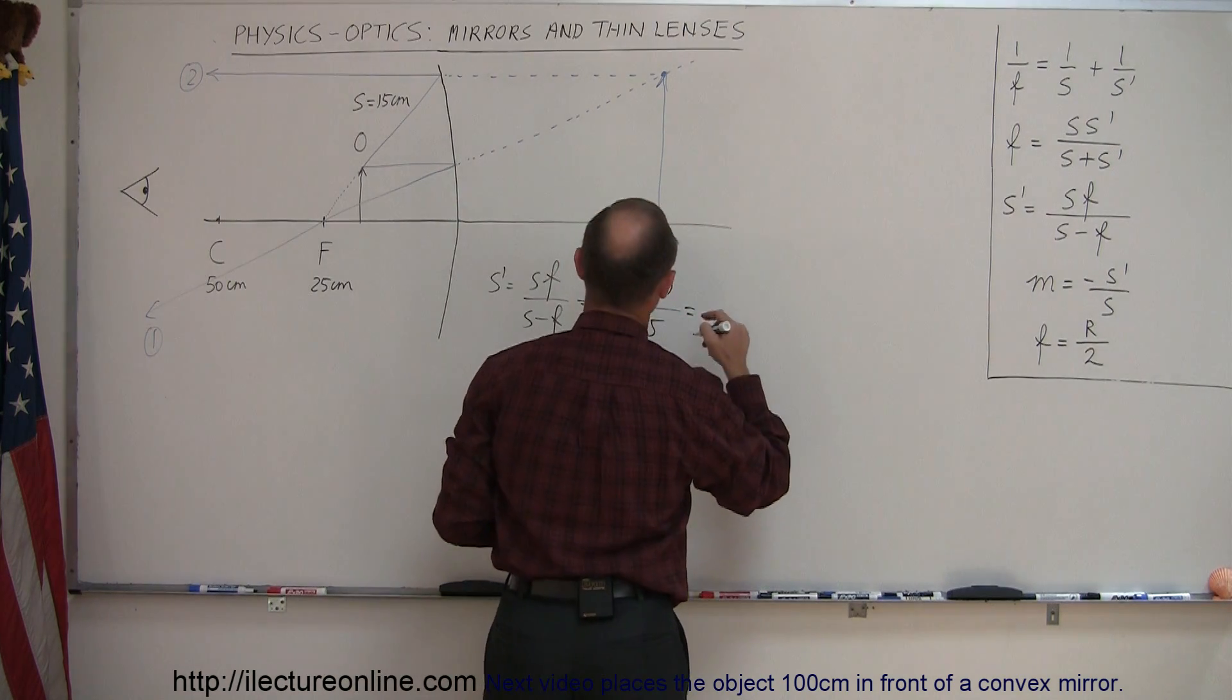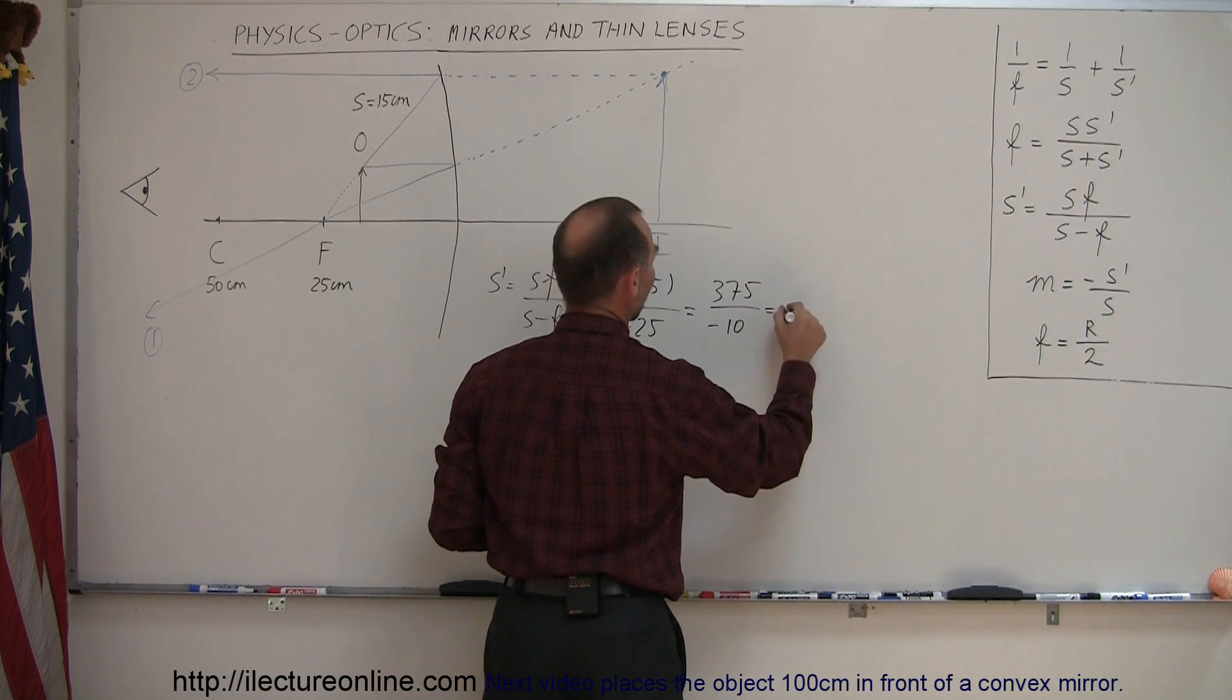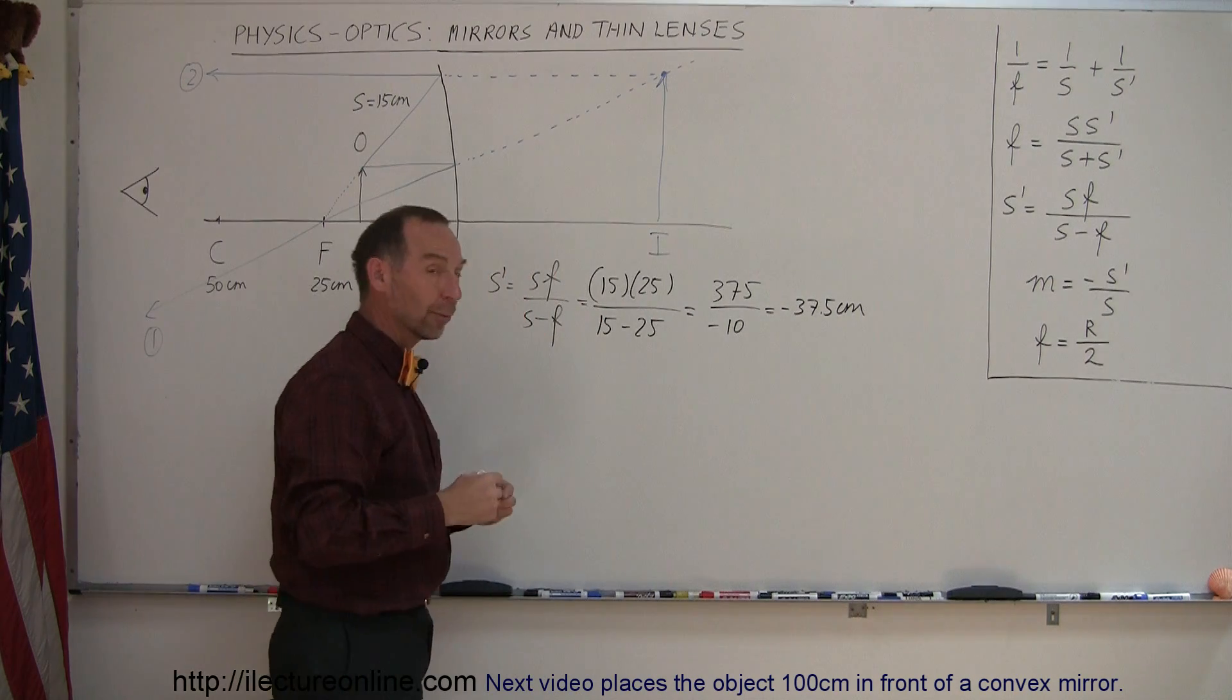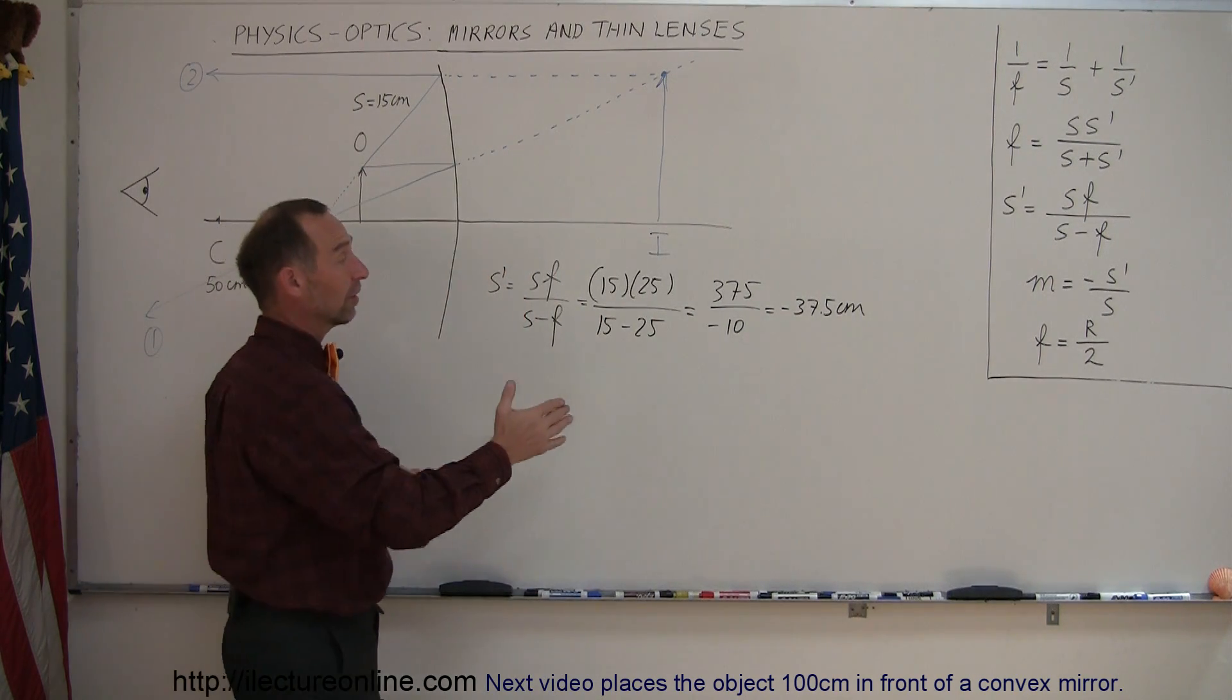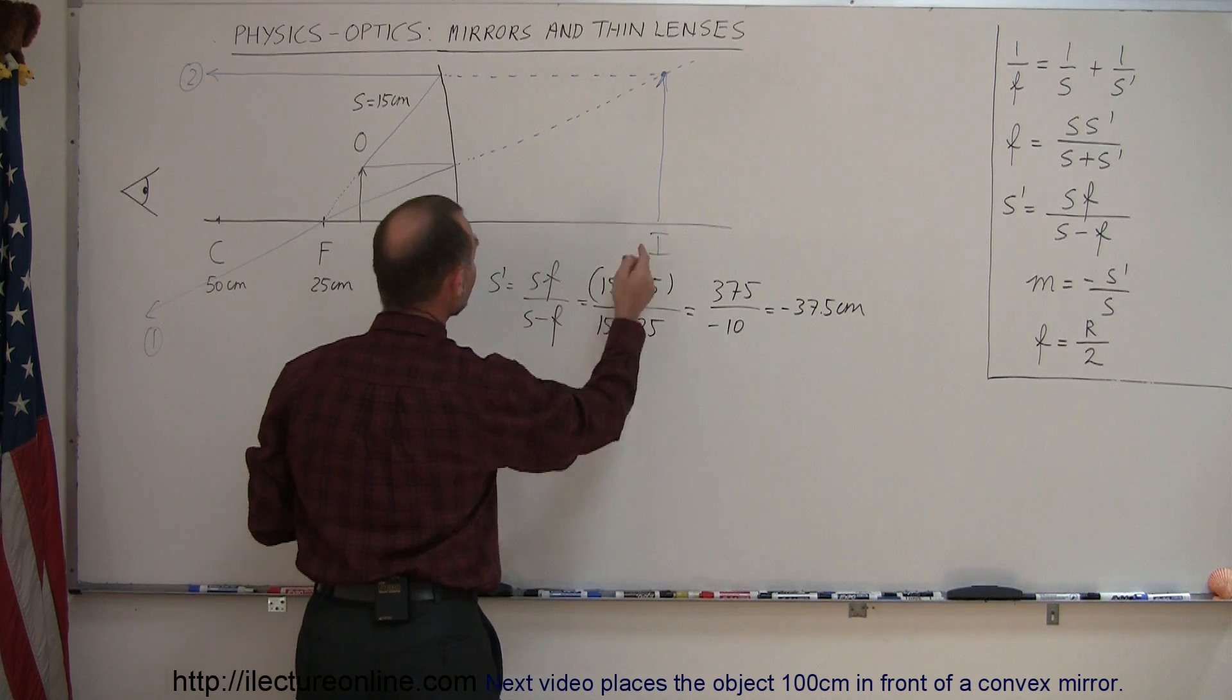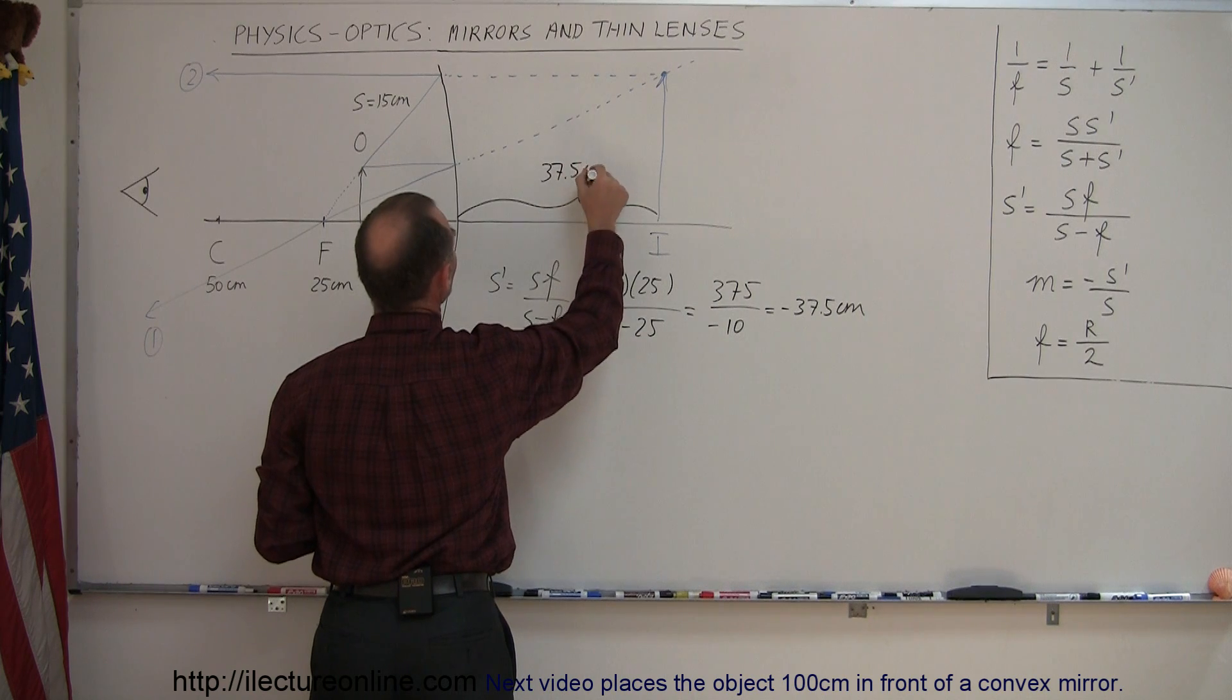So it would be, looks like 375 divided by a minus 10, which is a minus 37.5 centimeters. All right, what does that mean? The image is 37 and a half centimeters away from the mirror, but with the negative, that means it's behind the mirror. So this distance right here is 37.5 centimeters.